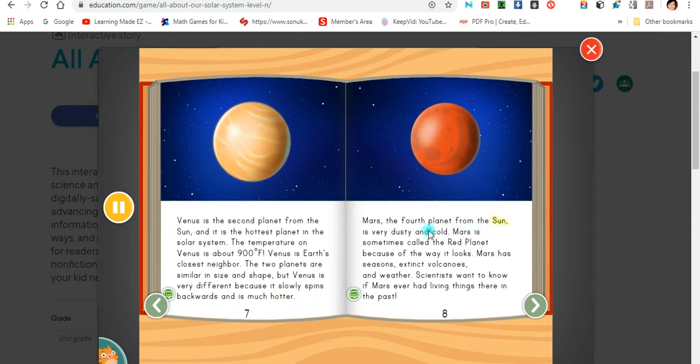Mars, the fourth planet from the sun, is very dusty and cold. Mars is sometimes called the red planet because of the way it looks. Mars has seasons, extinct volcanoes, and weather. Scientists want to know if Mars ever had living things there in the past.